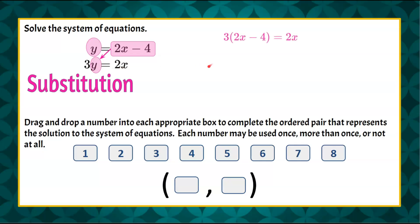So let's start by rewriting our second equation. It's 3 times y, and we know that y is equal to 2x minus 4. So now we have our equation, we have variables on both sides, we need to distribute. So let's solve for x.